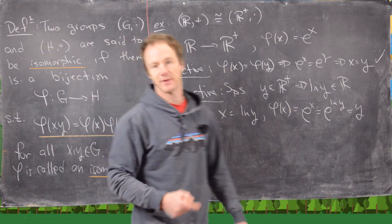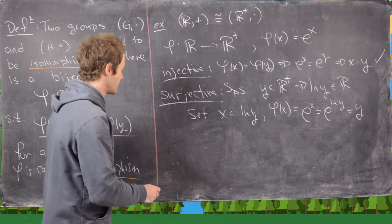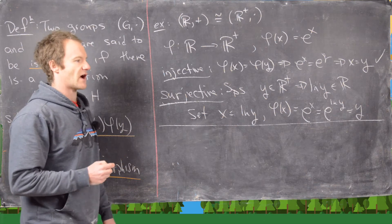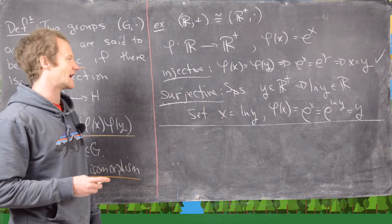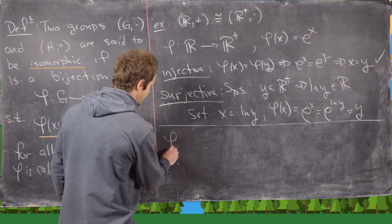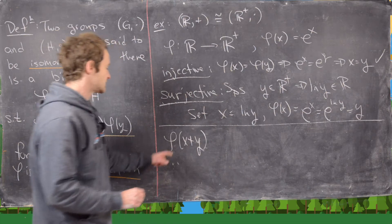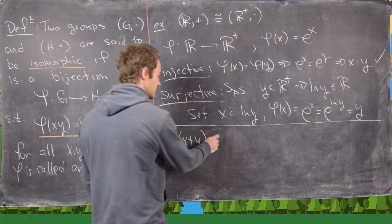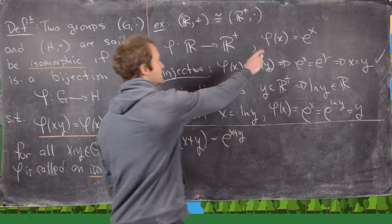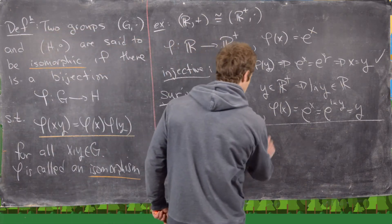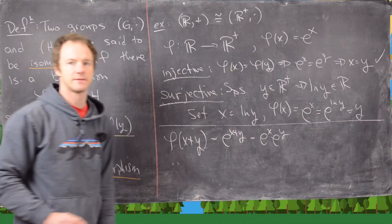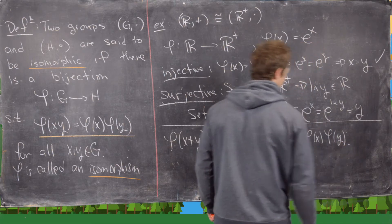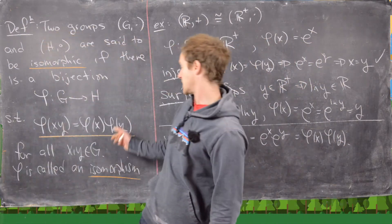Now we check the compatibility condition. In our last example we could check all possible products since the group had order two, but we can't do that here. So let's take phi(x + y): that's e^(x+y) by definition, which by exponent rules equals eˣ · eʸ = phi(x) · phi(y).